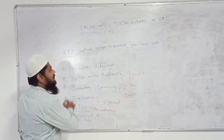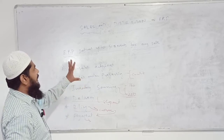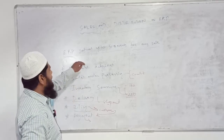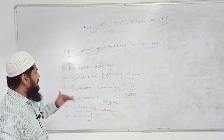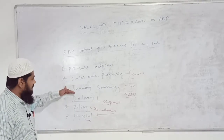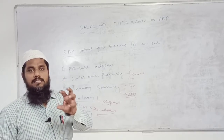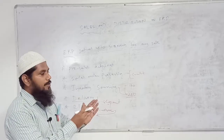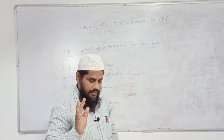This is the sales and distribution process, carried out with the help of six sales events: pre-sales activities, sales order processing, inventory sourcing, delivery, billing, and payment. These six sales events help sales and distribution to make the job easy.